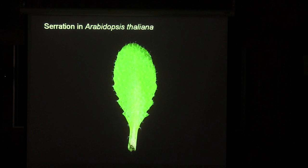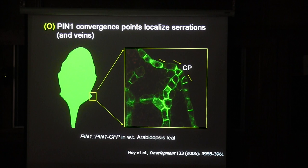Arabidopsis is not at all the best plant for this because the leaves are simple, but they have some serrations. So the question is: can we understand where these serrations come from? I paired up with Miltos Tsiantis, then at Oxford and now at the Max Planck Institute in Cologne, trying to figure out what is the mechanism of patterning of these serrations.